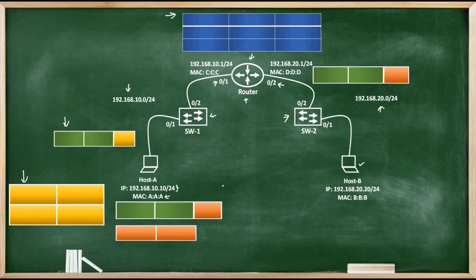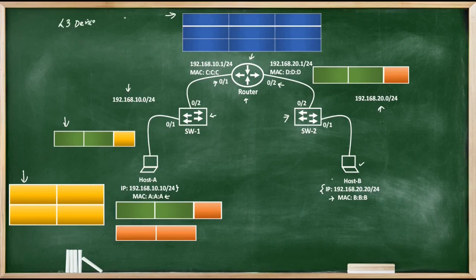Host A has IP address 192.168.10.10/24 and its MAC address is A:A:A. One important thing to note here is that as this router is a Layer 3 device, we have assigned IP addresses to its interfaces. The meaning of a Layer 3 device is that the router works at Layer 3, or the Network Layer, of the TCP/IP model. This layer mainly deals with routing of packets based on IP address, hence we call a router a Layer 3 device.